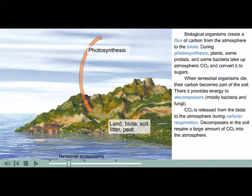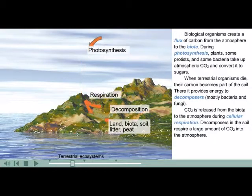When terrestrial organisms die, their carbon becomes part of the soil. There, it provides energy to decomposers, mostly bacteria and fungi. Carbon dioxide is released from the biota to the atmosphere during cellular respiration. Decomposers in the soil respire a large amount of carbon dioxide into the atmosphere.